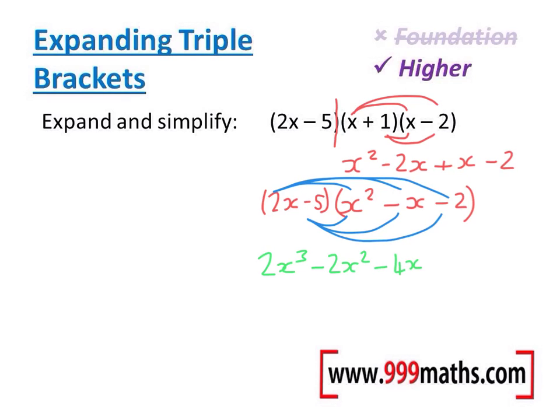Underneath now, we've got minus 5 times by x squared. That will be minus 5x squared. Now since it's an x squared term, I'm going to write it underneath the other x squared term. It will just help me neaten it up in a second.